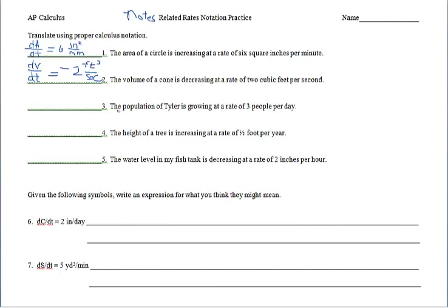Number three: the population of Tyler is growing at a rate of — so we have a rate of change over time, d over dt. What variable can we use to represent population? That's your choice; I'm going to use uppercase P. So dP/dt represents that our population is changing over time, equal to 3 people per day. This might be a good place to pause the video, answer the next two questions, and then restart to do a self-check.